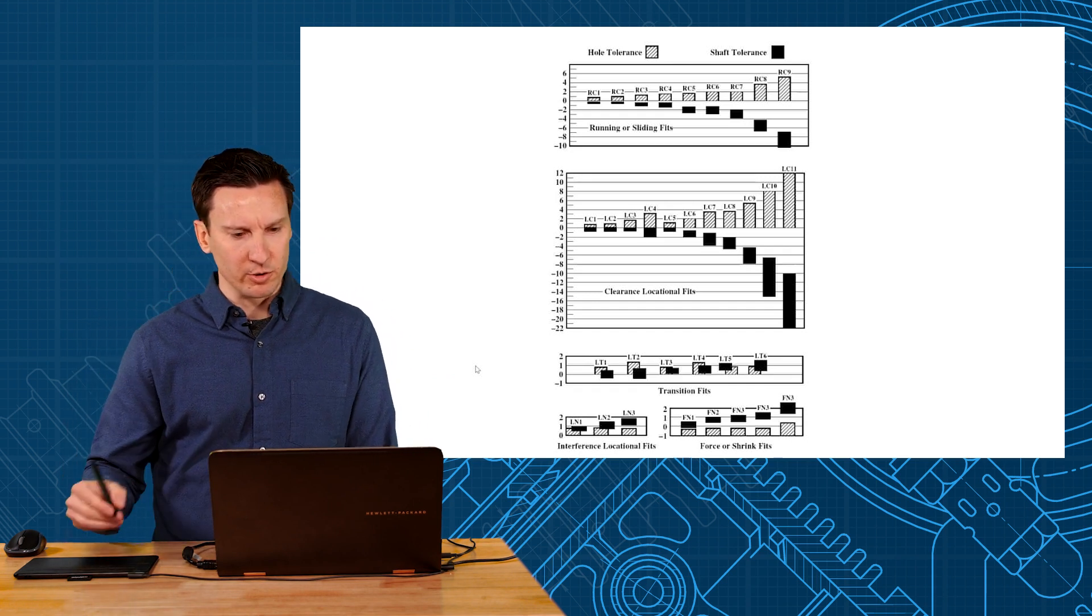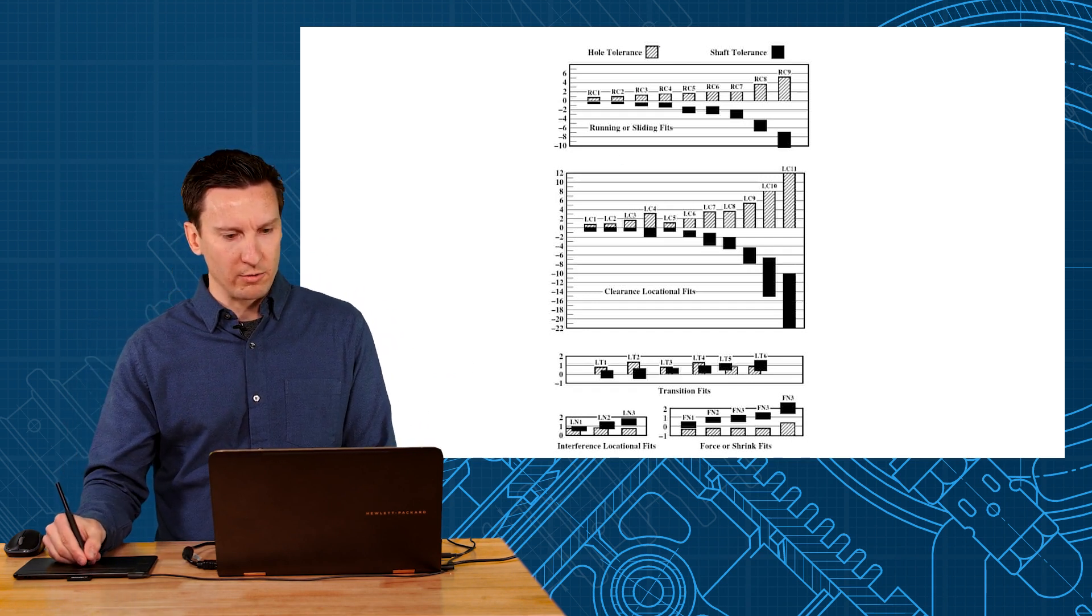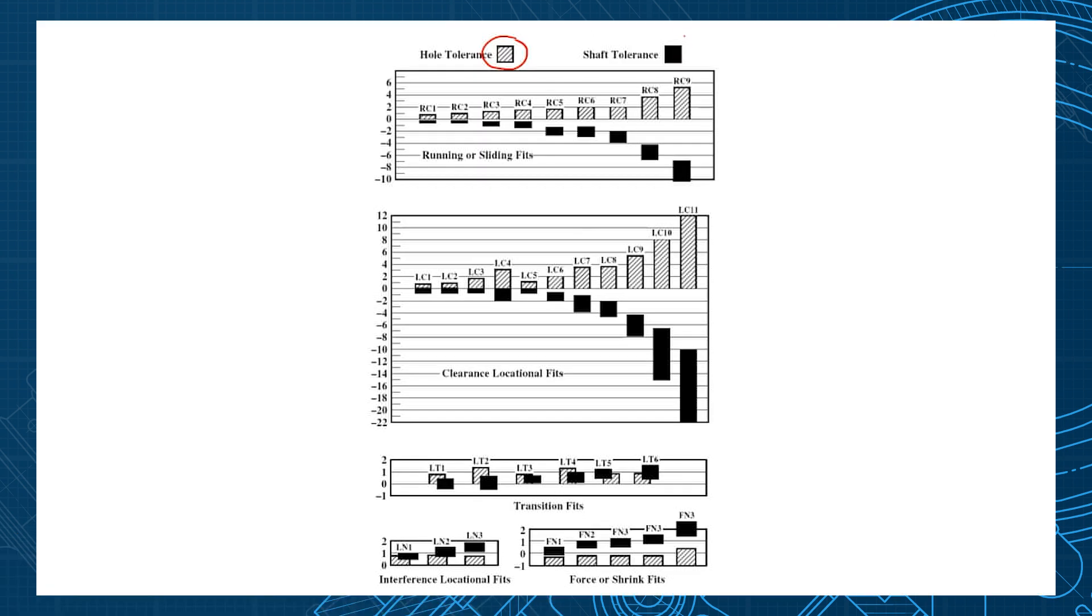This graphic in the standard shows it really well too how the hole tolerance is going to be your shaded and the shaft tolerance is your black. They show how the running and sliding fit, and if you notice there's always a minimum clearance between these pieces. They range anywhere from RC1 which is your close translating shafts running up to RC9 which are your loose fit bearings.